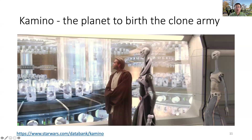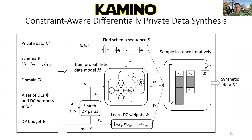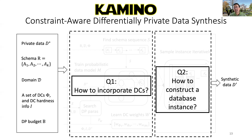To solve this problem, our solution is Camino. Camino was originally a planet in Star Wars, famous for its technology of the clone army. In a metaphoric manner, we are building a Camino for private data synthesis. Here is the architecture of Camino. It takes all the inputs on the left, and Camino first finds a schema sequence, trains a set of discriminative models, and learns the DC weights, and subsequently samples an instance iteratively.